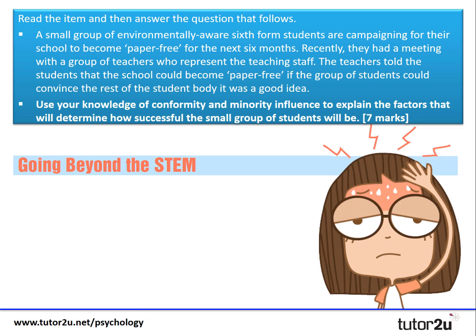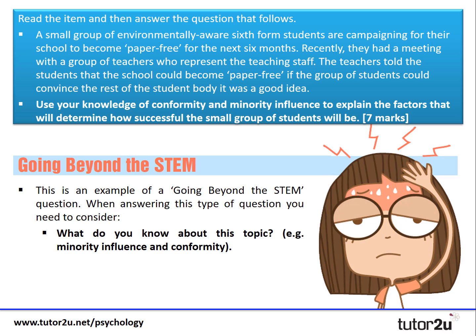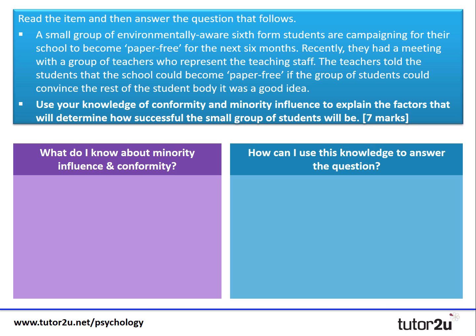In terms of this question, it's what I would call a 'going beyond the stem' question. What that means is you've got to consider two key questions before you start to think about how you would structure an answer. The first is: what do you know about the topic? In this case the question actually gives you a steer, because it says use your knowledge of conformity and minority influence. So we can almost break this question in half.